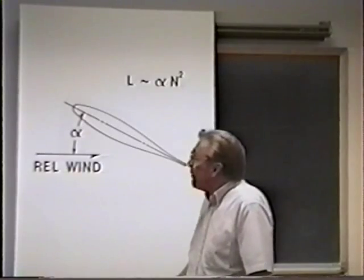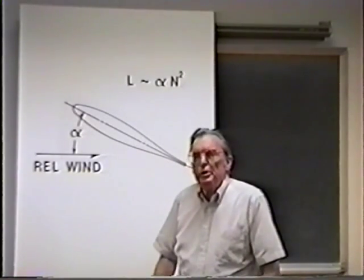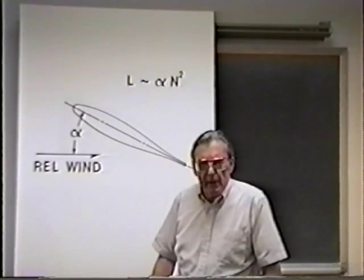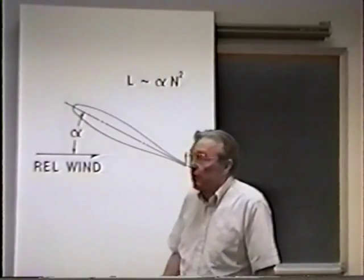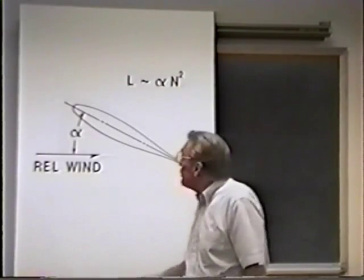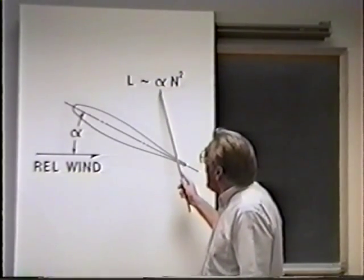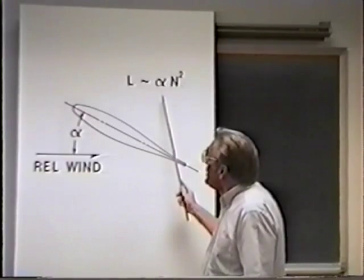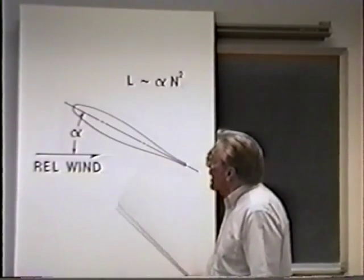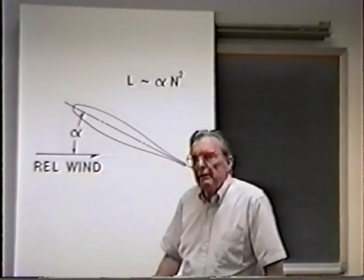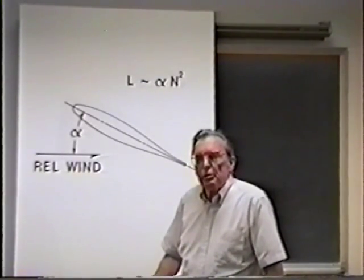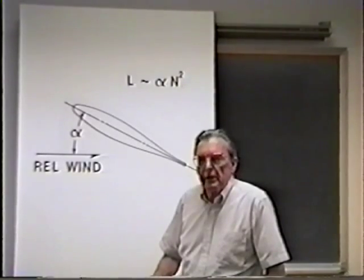In a helicopter, a similar thing happens when you allow the RPM to go down. When the RPM is allowed to decrease in the rotor of the helicopter, then the angle of attack of the rotor blades must increase. As the angle of attack of the rotor blades increases, eventually it will increase to a point where the rotor blades will stall, just like the airplane wing stalls.